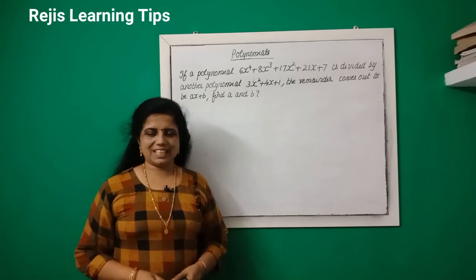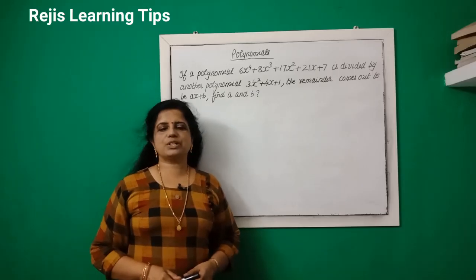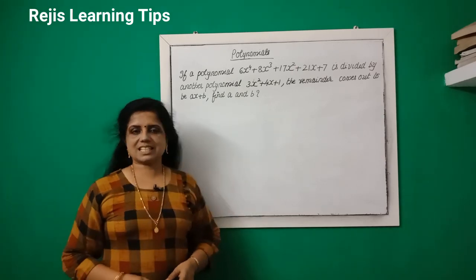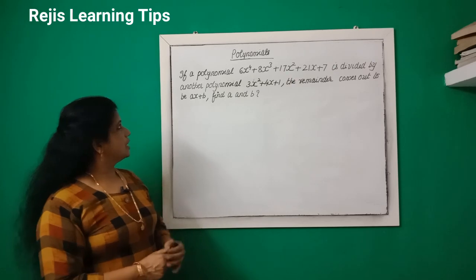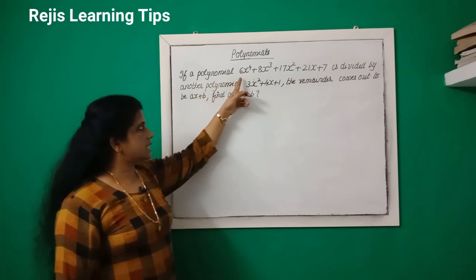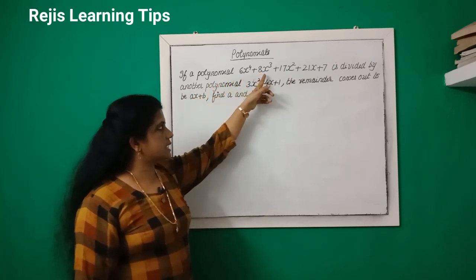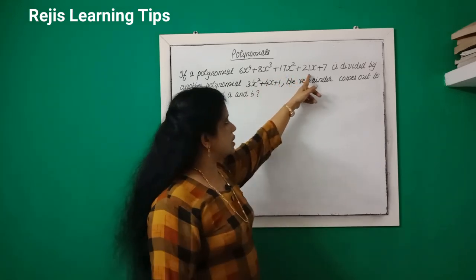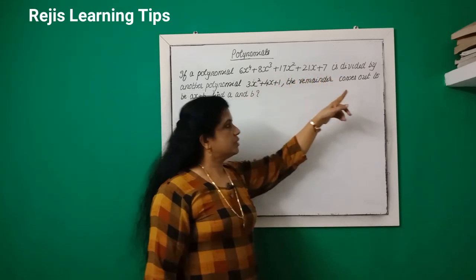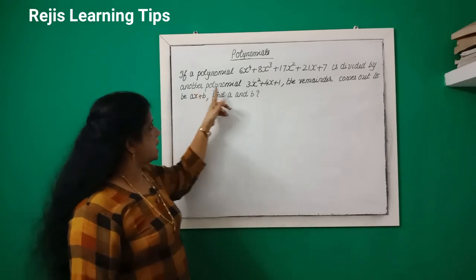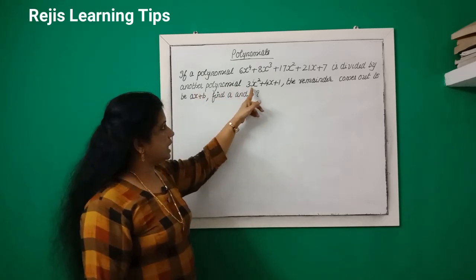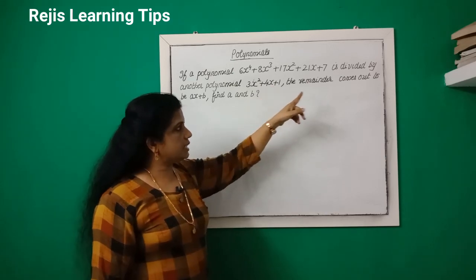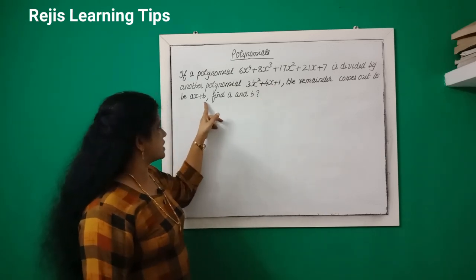Hi students, welcome back. Today we are going to discuss some questions from polynomials extra questions. If a polynomial 6x⁴ + 8x³ + 17x² + 21x + 7 is divided by another polynomial 3x² + 4x + 1, the remainder comes out to be ax + b.